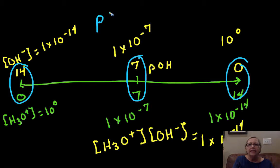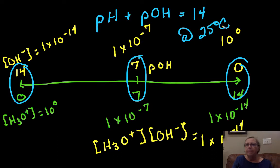What you would see is that your pH plus your pOH is equal to 14 at 25 degrees Celsius.